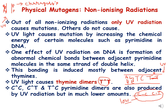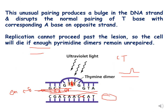In a strand of DNA, adjacent thymines can form a bond creating a thymine dimer. This unusual pairing produces a bulge in the DNA and disrupts the normal pairing of the T base with the corresponding A base on the opposite strand. As a result, replication cannot proceed beyond this lesion, and the cell will die if enough pyrimidine dimers remain unrepaired.